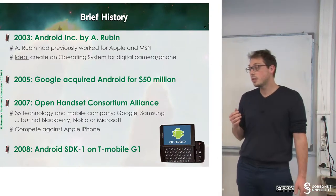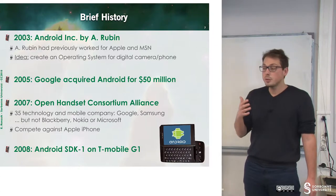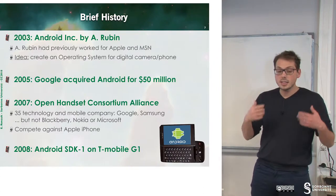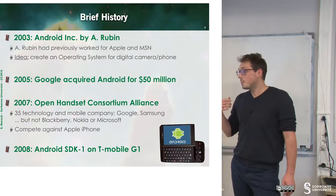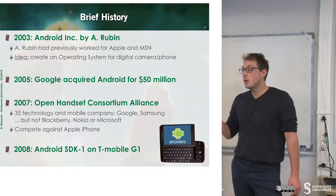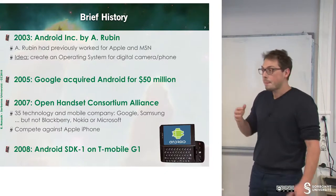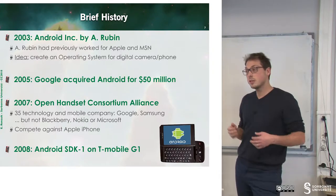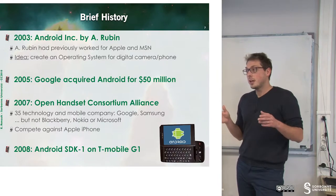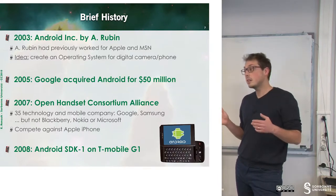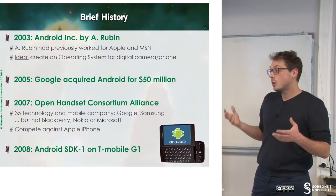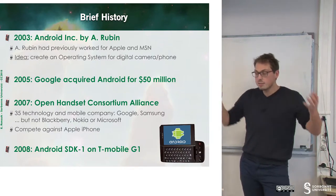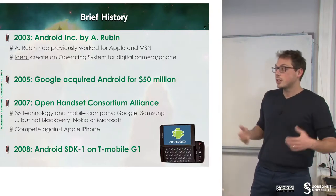Android started in 2003 by Andy Rubin. Andy Rubin worked at MSN and Apple and decided to develop a new operating system. The goal was to benefit from the camera and the phone of existing phones. In 2003, there were no dedicated operating systems for phones, and each company developed its own.